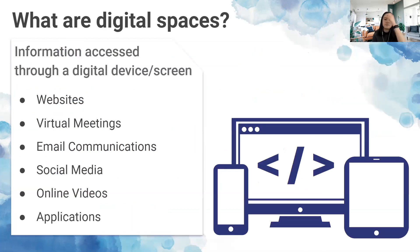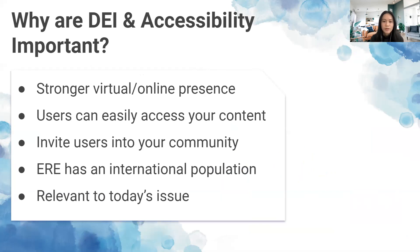A digital space is where information is accessed through a digital device or screen — think websites, virtual meetings, email, social media, online videos, and other applications. DEI and accessibility are important in digital spaces because websites are important resources of information. Within the past year there's been a much stronger online virtual presence, making it even more important to ensure they are accessible and inclusive for current and potential audiences.